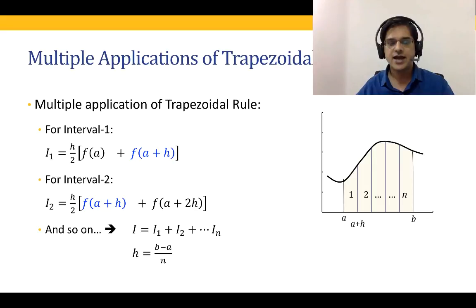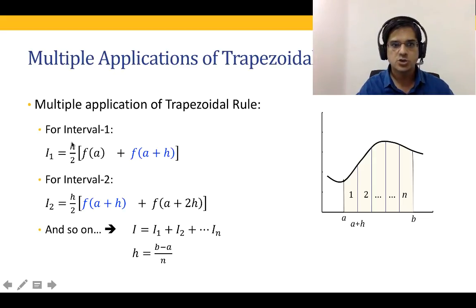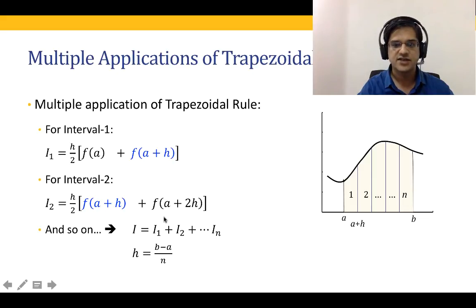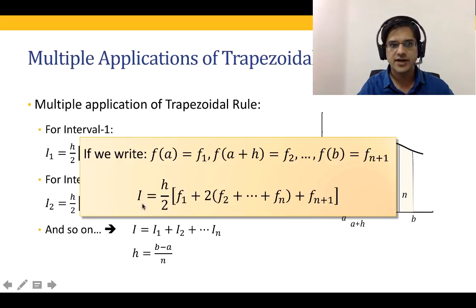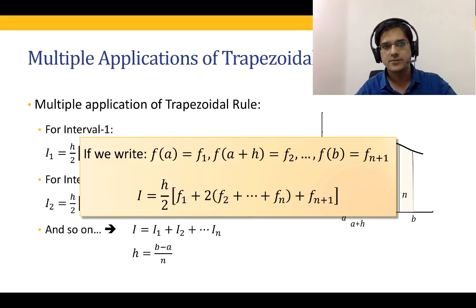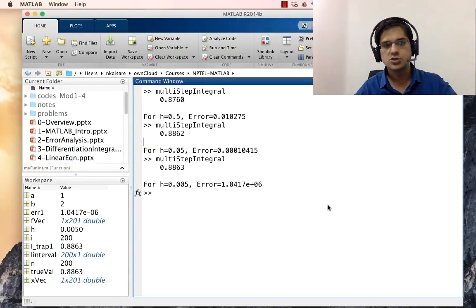Now I'll show a second, more efficient way to implement this. When you sum all the individual interval areas, you get: I = h/2 × [f1 + 2×(f2 + f3 + ... + fn) + f(n+1)]. The first and last function values appear once, while all interior values appear with a factor of 2. This direct formula is easier to code in MATLAB.